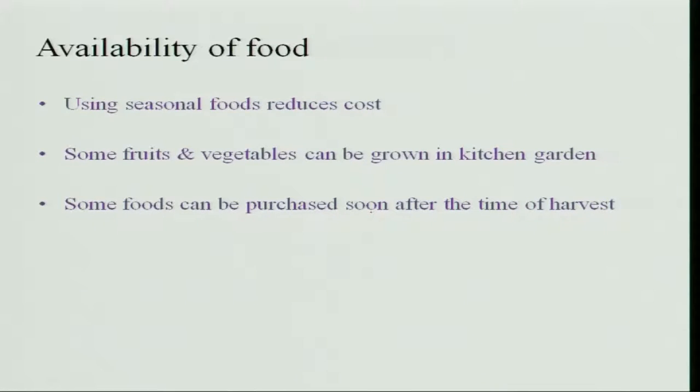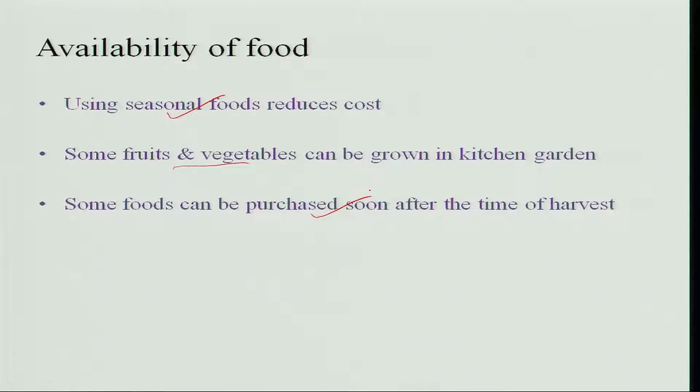Availability of food also affects selection. Using seasonal foods will not pose a problem in food selection and it also reduces cost. Some fruits and vegetables can be grown in the garden itself. Today, home gardening has gained so much importance that whether it is an independent house with space for a kitchen garden or an apartment, some space can be created for a kitchen garden. Some foods, especially grains and dals, can be purchased soon after harvest when the cost is less and quality is good — provided you know how to store them properly for the rest of the year.